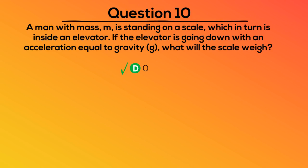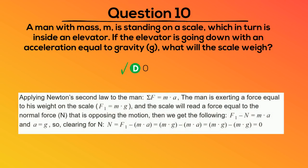The correct answer is D, zero. Applying Newton's second law to the man, force equals mass times acceleration, the man is exerting a force equal to his weight on the scale, and the scale will read a force equal to the normal force that is opposing the motion. Then we get the following. So clearing for N, we get the following.